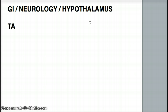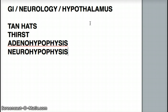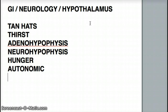The mnemonic I always use is TEN HANDS. T stands for thirst, A stands for adenohypophysis — that means the anterior pituitary. Because they both start with A, it's easier to remember. Neurohypophysis is the posterior pituitary — the one that doesn't start with A. H is for hunger, that's where our GI comes in. A is for autonomic. T is for temperature. S is for sexual urges.